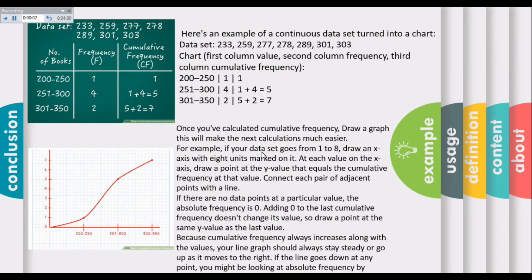Now we have a data set: 233, 259, 277, 278, and so on. We can find cumulative frequency as we found earlier.